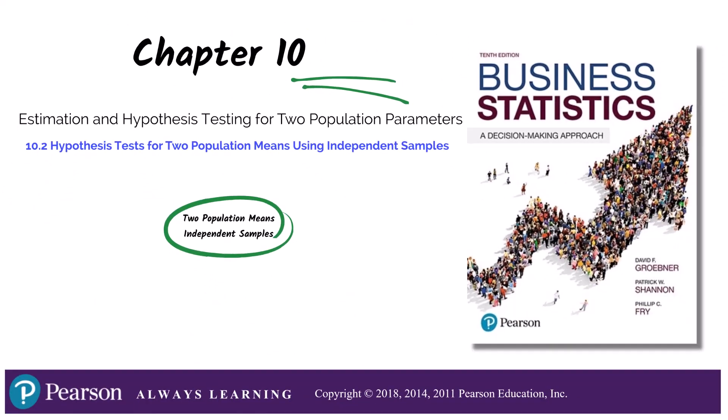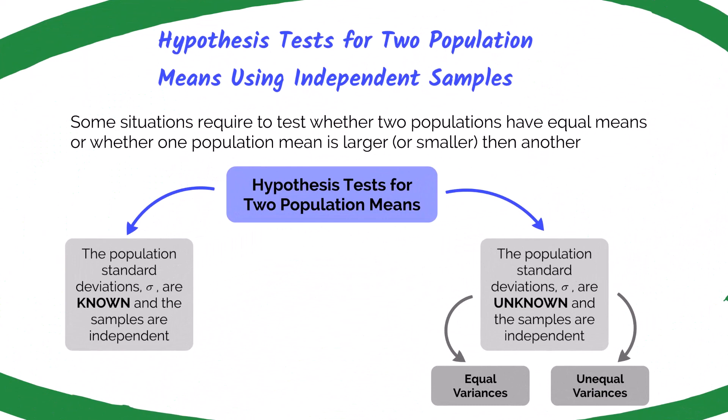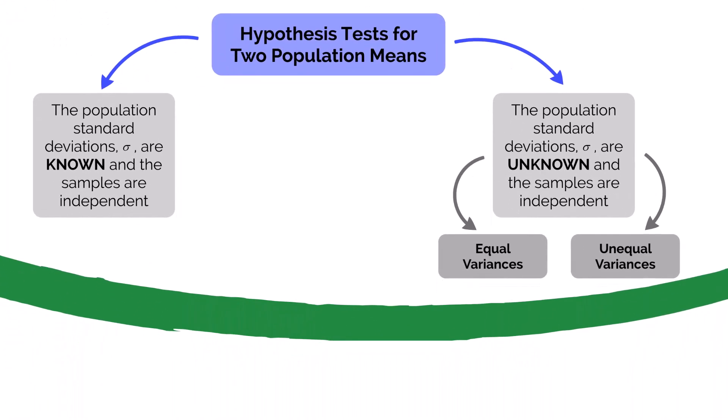So if you're ready, let's get started. If you recall from chapter four, independent events are when neither event influences the other. In this chapter, independent samples occur when we select samples from two populations in a way that the values in one sample have no influence on the values in the other sample. In business, there'll be times when you must test whether two populations have equal means, or if one population mean is greater or smaller than the second population mean. We learned how to conduct hypothesis tests for one population in chapter nine, and the process is very similar for hypothesis testing for two populations. Here we have two different situations for hypothesis testing for two population means, and we'll be focusing on independent samples for both situations.